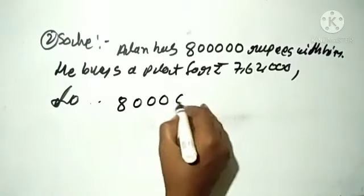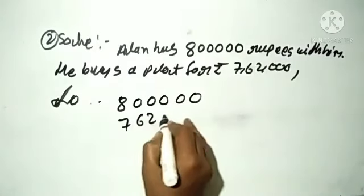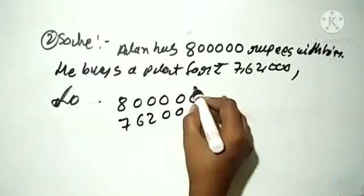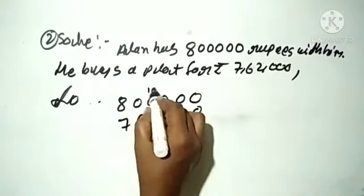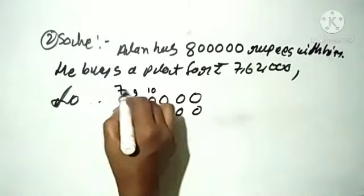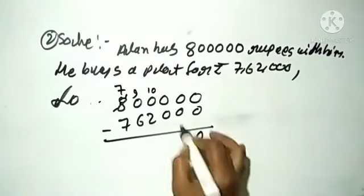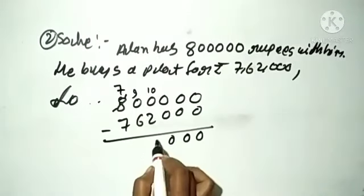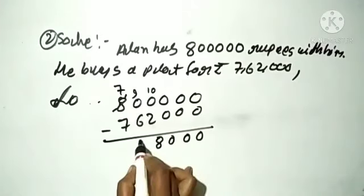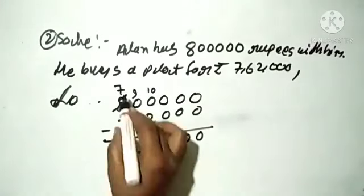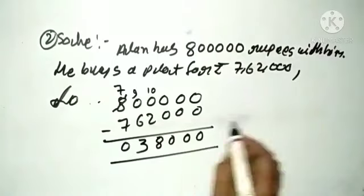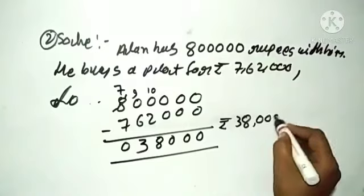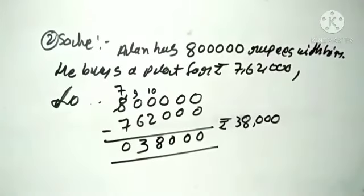8 lakhs we will minus. 0, 0, 0, 0. 10 minus 2 is 8. 9 minus 6 is 3. 7 minus 7 is 0. The answer is 1,38,000 rupees.